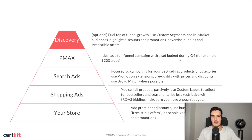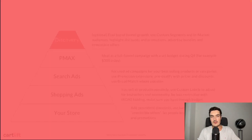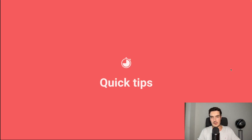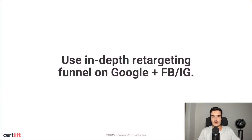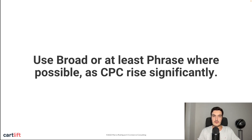So these are the key points of my Q4 strategy. Of course there are a thousand details to it — I just wanted to give an overall overview on these different campaign types. Let's talk about some important quick tips. First, use in-depth retargeting on Google, Facebook, and Instagram. Google isn't the most effective when it comes to retargeting — I prefer Facebook and Instagram because the news feed is a better format for it.